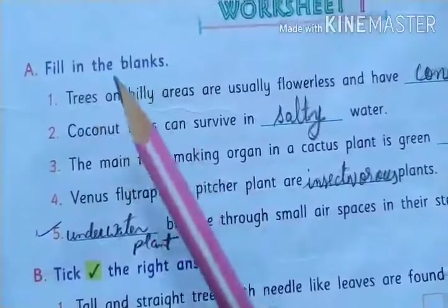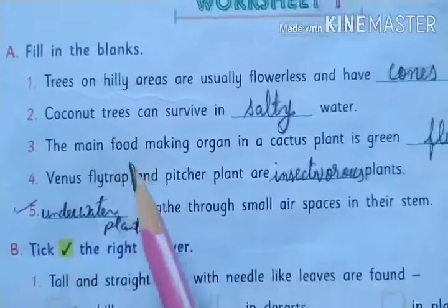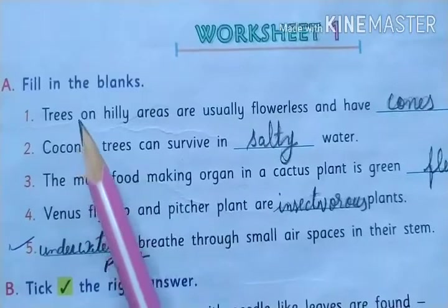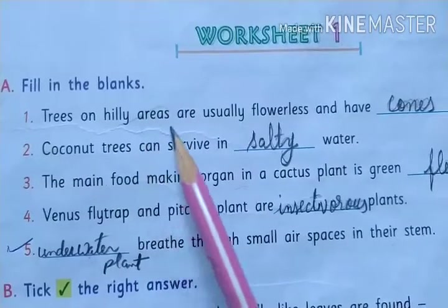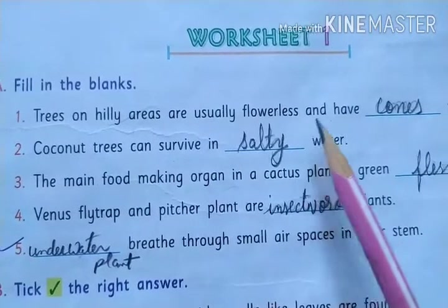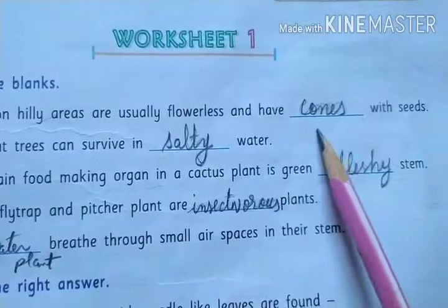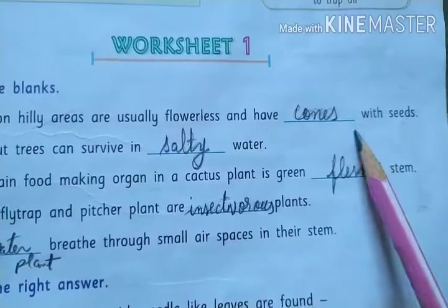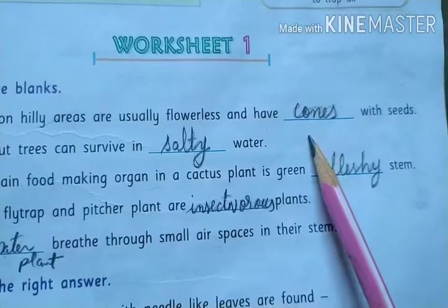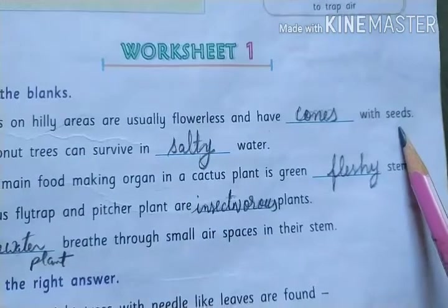Now we will do the fill-in-the-blanks exercise. Trees on hilly areas are usually flowerless and have cones with seeds. The answer is: cones with seeds.